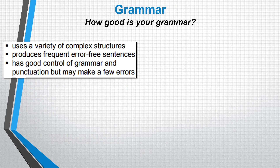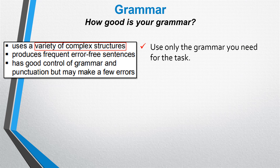Finally, the fourth marking criteria is grammar — how good is your grammar. You need to try and use a variety of complex structures, but that often scares students unnecessarily. You will be writing complex sentences and you won't even know you're doing it. It basically means any sentence that includes a linking word such as 'and,' 'however,' or 'therefore.' If you're using those words, you're writing complex sentences. There are many ways to write complex sentences and you will be doing this naturally anyway, but I will show you some good examples of complex structures you can use.